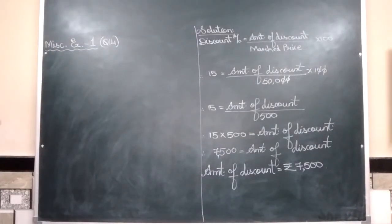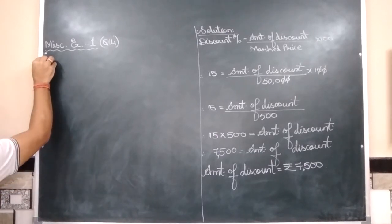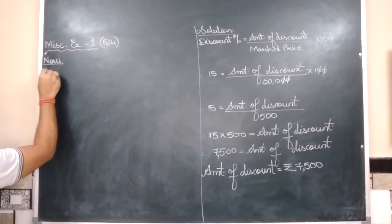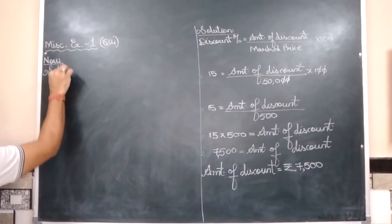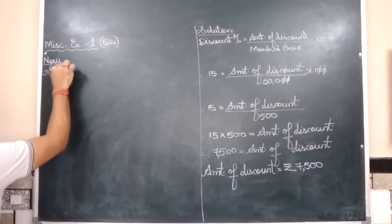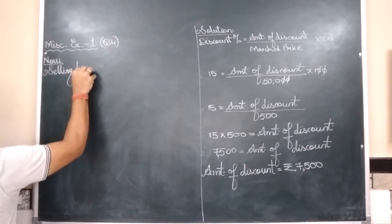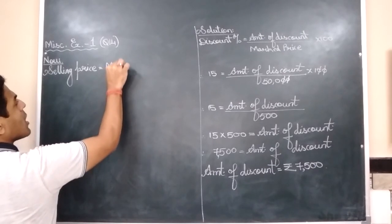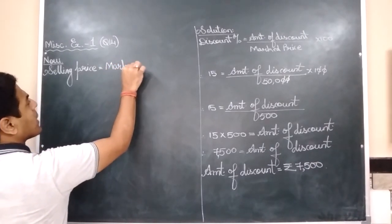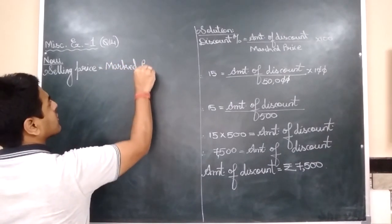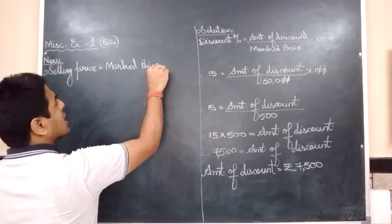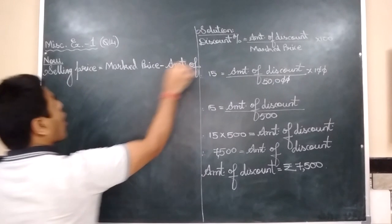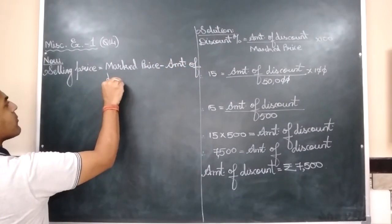Now let us continue the sum and we will write here. Now, comma, selling price is equal to marked price minus amount of discount.